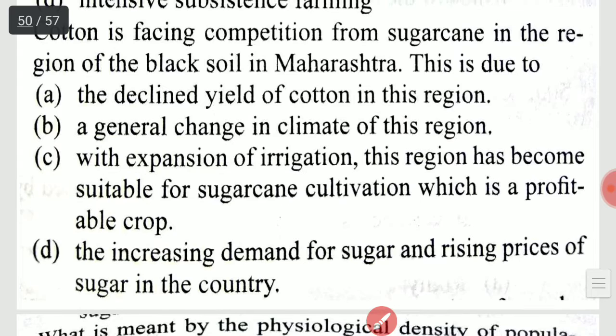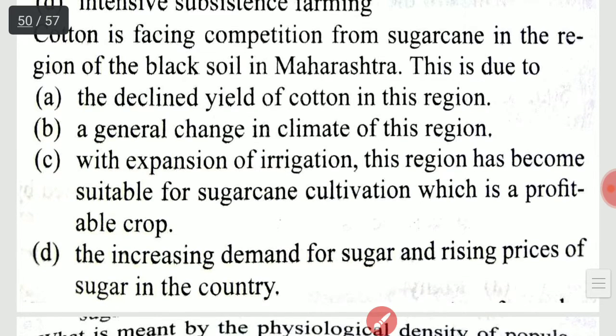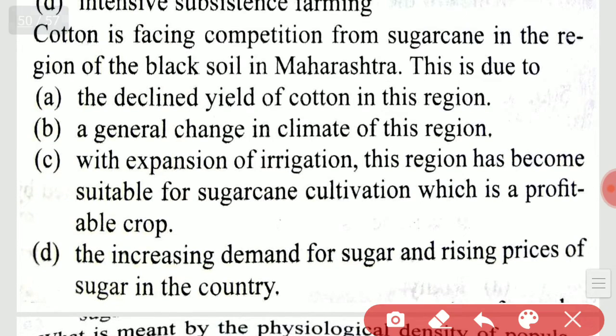Cotton is facing competition from sugarcane in the region of black soil in Maharashtra. This is due to the expansion of irrigation — this region has become suitable for sugarcane cultivation, which is a more profitable crop.